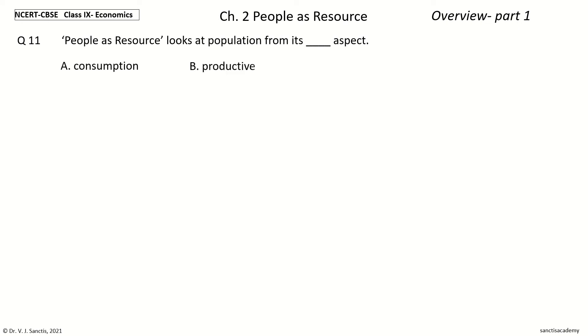Question 11: People as Resource looks at Population from its ___ Aspect. The options are: Consumption, Productive, Creative, Reliability. Your time to choose. And the answer is: Productive. So, People as Resource looks at Population from its Productive Aspect.